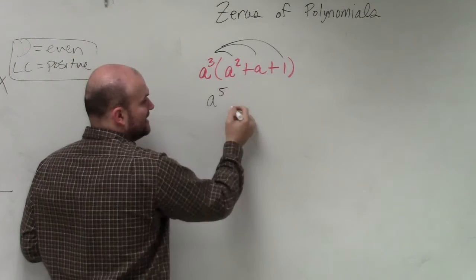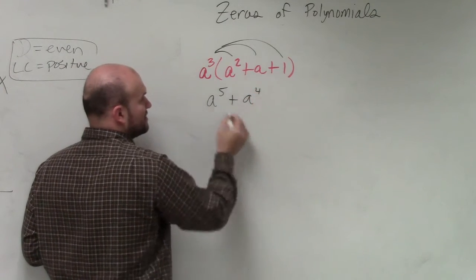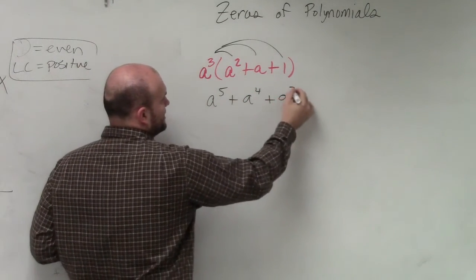a cubed times a is going to be a positive a to the fourth. And a cubed times 1 is going to be a positive a cubed.